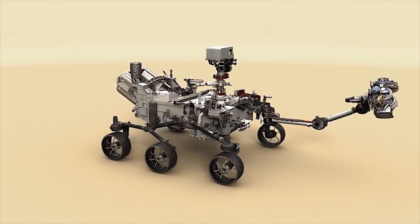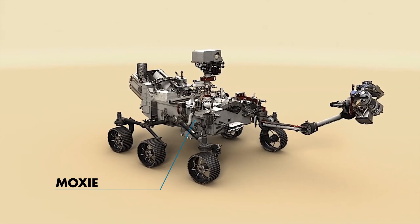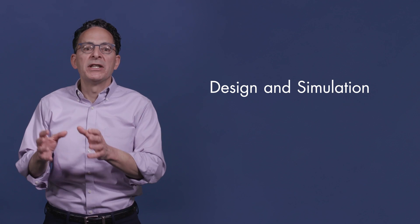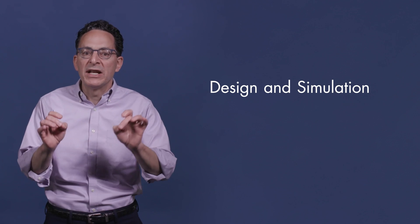This graphic shows where MOXIE is located on the rover. The team from MIT used MATLAB and Simulink to design and simulate the MOXIE system, including the electrolysis system, the heart of the device.